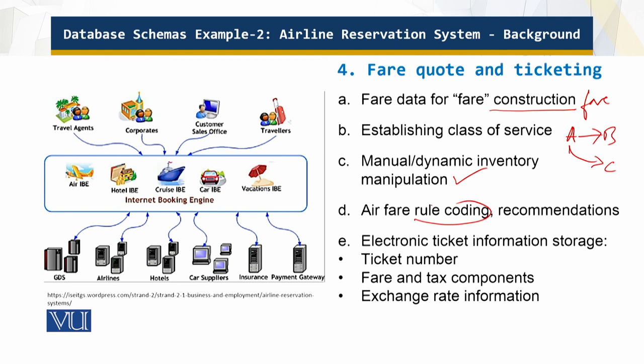The role of ticketing is very complex. A small number of paper tickets are still issued, but the electronic ticket information is stored in a database containing the ticket number, fare, tax components, and related data. The purpose of this background is to help you understand what is happening behind the scenes so that, as a problem solver, you can make sense of the ERD and diagrams in the next module.